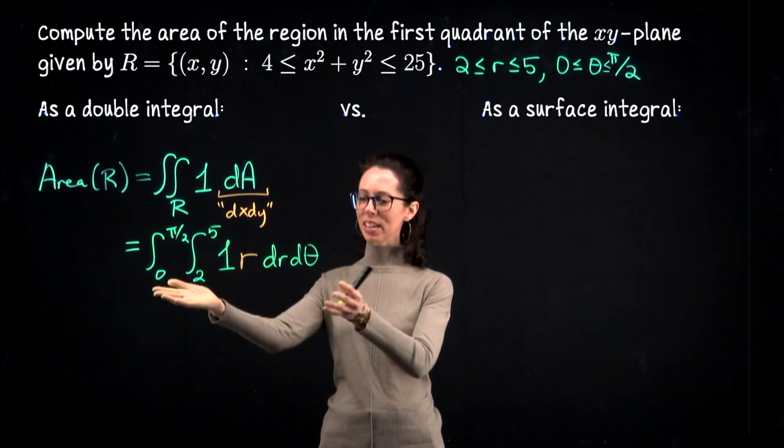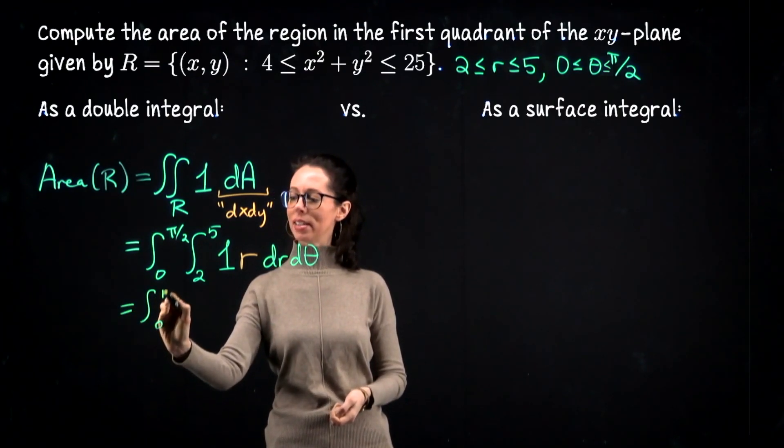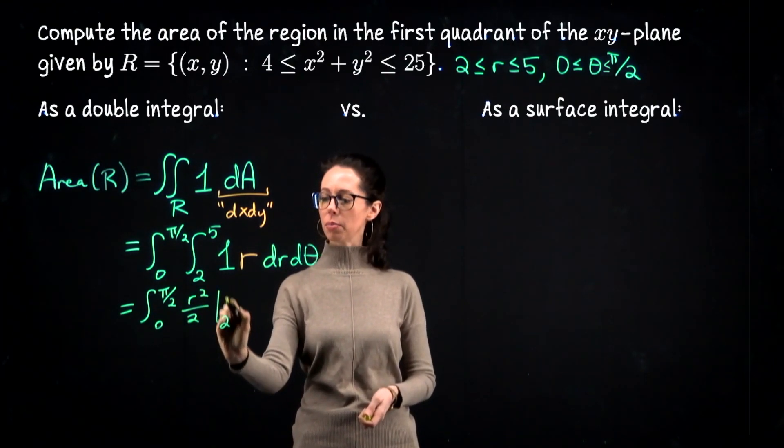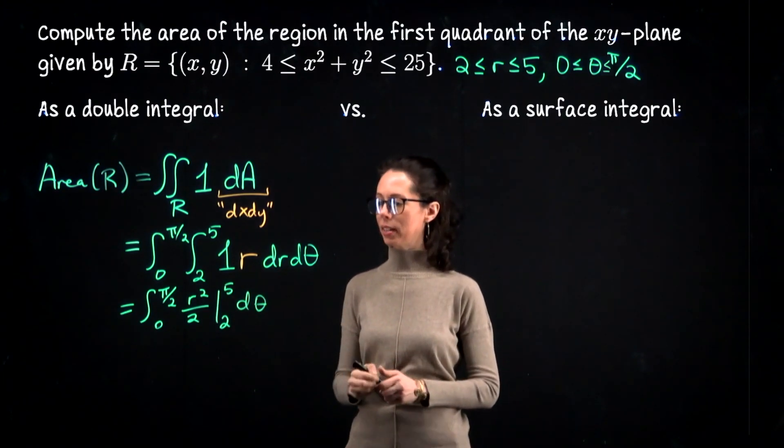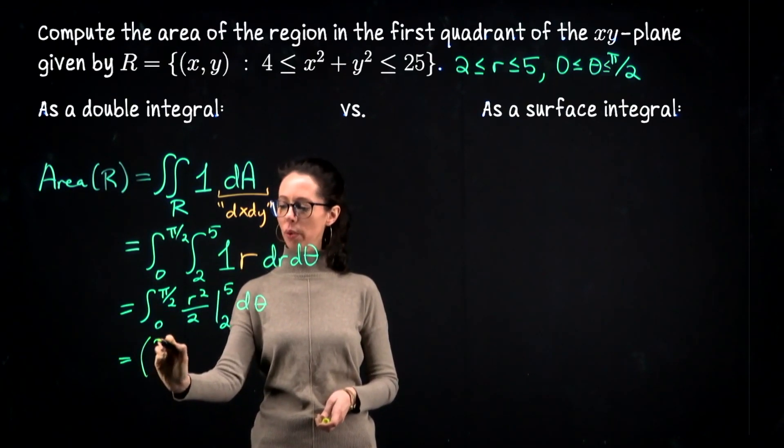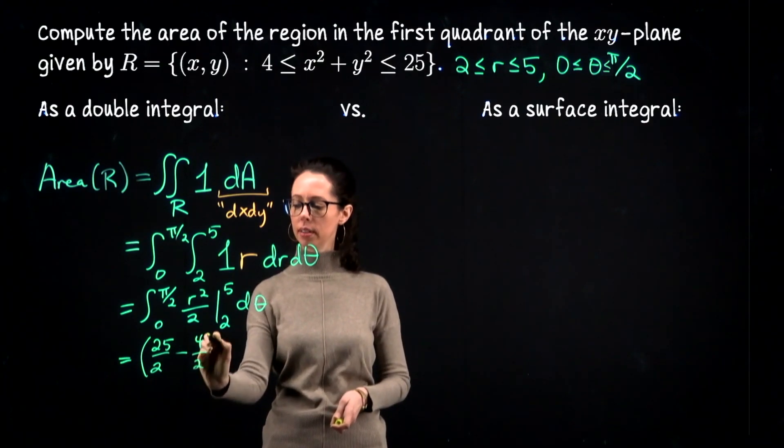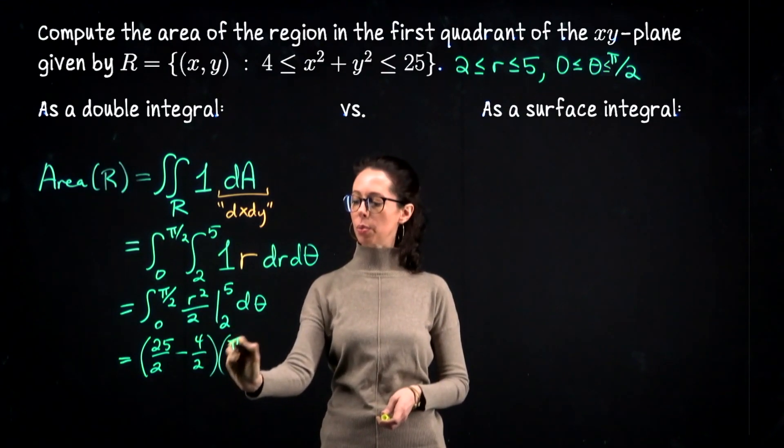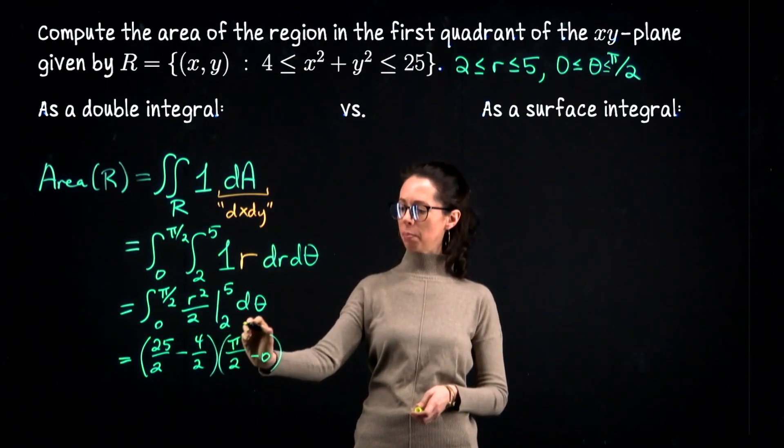Okay, this is the interesting thing to get to is the setup, but let's go ahead and finish. Let's see, if I anti-differentiate with respect to r, we get r²/2 going from 2 to 5, still have to anti-differentiate with respect to θ. So let me pull this computation out and write 25/2 minus 4/2 times θ from 0 to π/2. So that's going to be π/2 minus 0, so overall it's 21π/4.